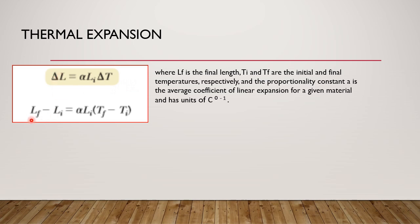Delta L equals L sub f minus L sub i, and delta T equals T sub f minus T sub i. If you want to find L sub f, once you know delta L you can derive it. L sub f is the final length. T sub i and T sub f are the initial and final temperatures respectively. The proportionality constant alpha is the average coefficient of linear expansion for the given material.